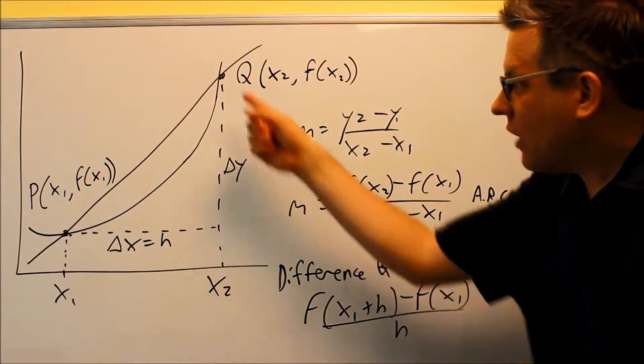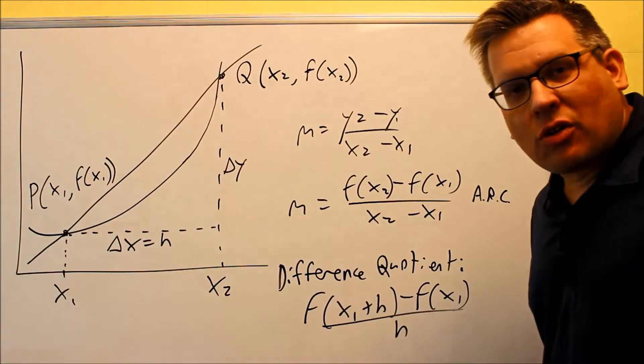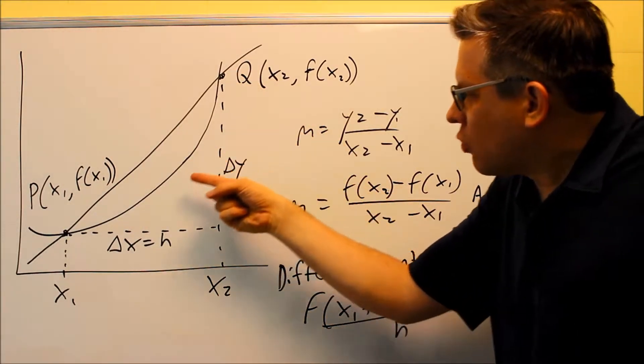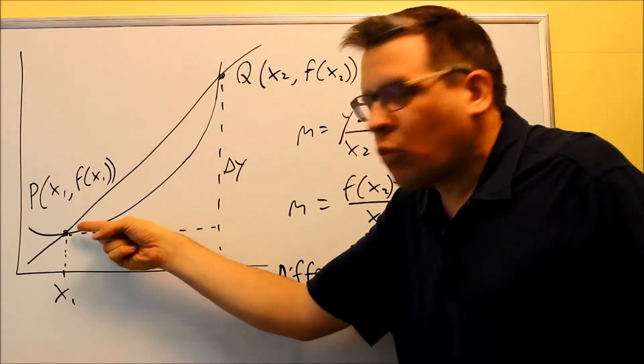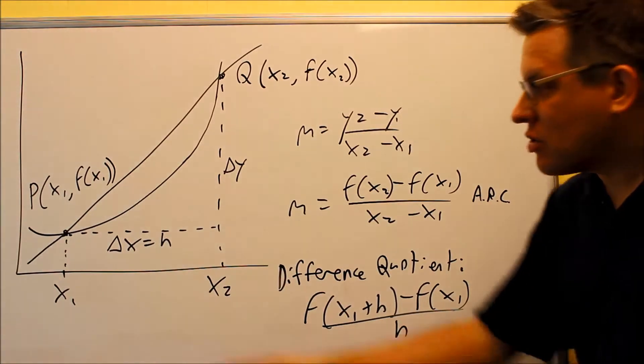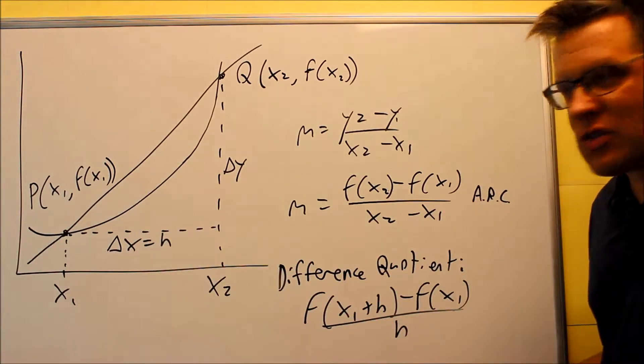Now ideally, you want to have these two points be as close as possible together, and then what will happen is you're going to bring the points really close to each other, so that one point is almost on top of the other one, and that's going to end up giving you the exact slope at that point. So what we have set up here is we have two different x values,